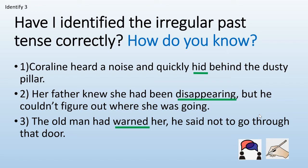Have I identified the irregular past tense verbs correctly, and how do you know? Sentence one: Coraline heard a noise and quickly hid behind the dusty pillar. Sentence two: Her father knew she had been disappearing, but he couldn't figure out where she was going. Sentence three: The old man had warned her — he said not to go through that door. Pause the video and tick or cross. The first one is a tick: to hide, past tense is hid. The second one — I underlined disappearing — that is incorrect, it ends in -ing, not an irregular past tense verb. The last one is also not correct; it is a past tense verb but it ends in -ed, so it's regular.